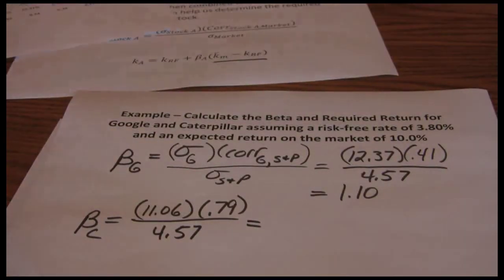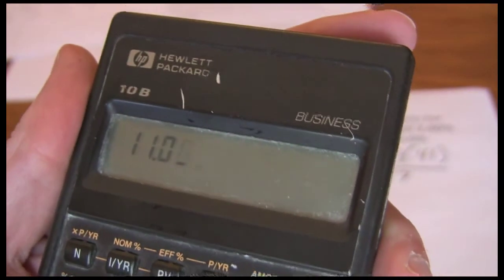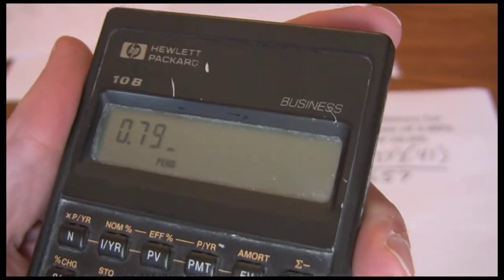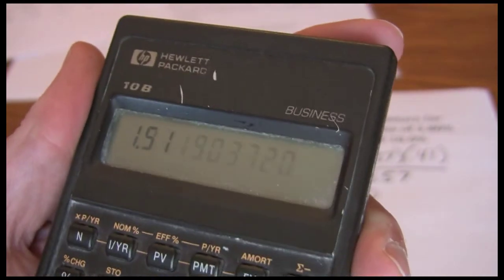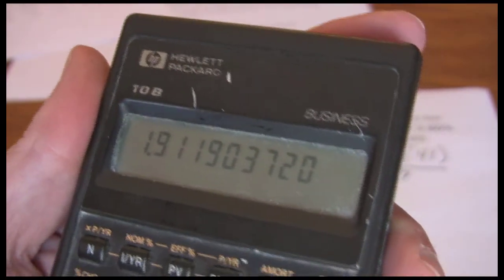Go ahead and grab our calculator. Work through the calculations. 11.06 times 0.79 divided by 4.57. Gives us a beta of 1.91.